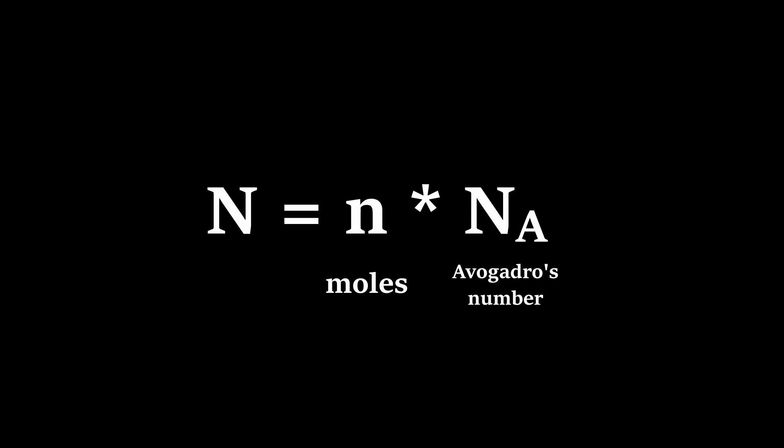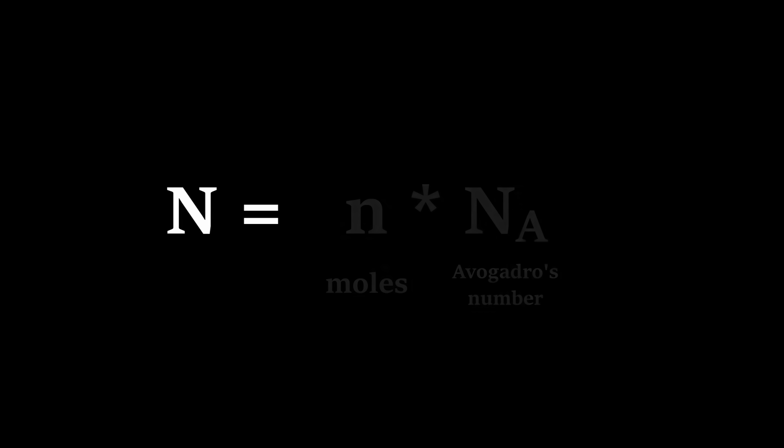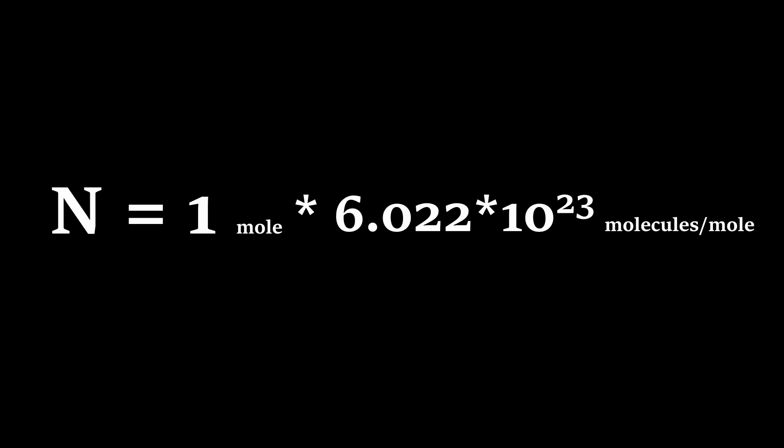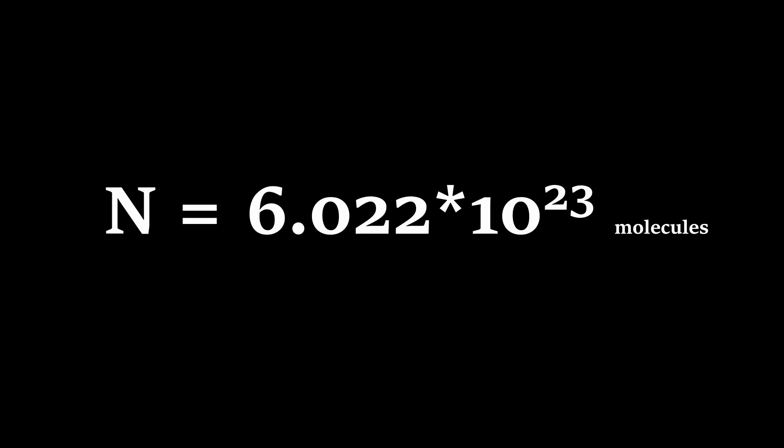Then, to find the amount of molecules of salt in our pile, we simply multiply 1 by Avogadro's number, and there we have it. There are 6.022 times 10 to the 23rd molecules of salt in our pile.